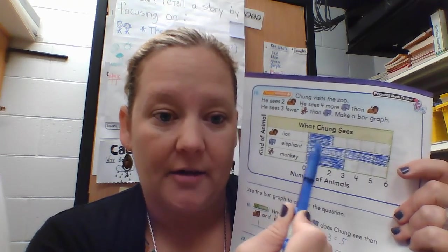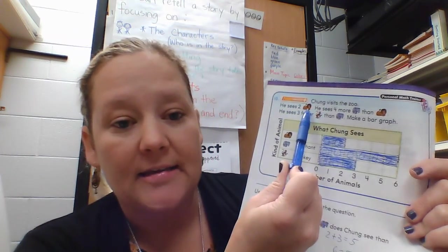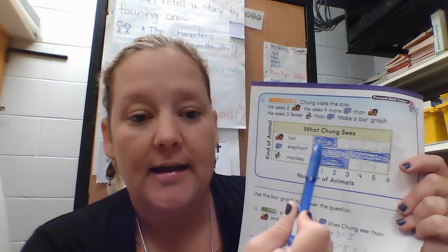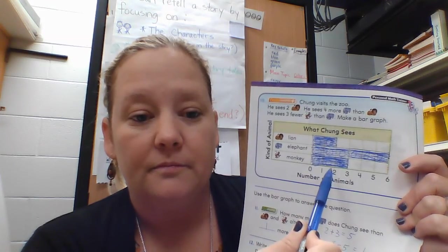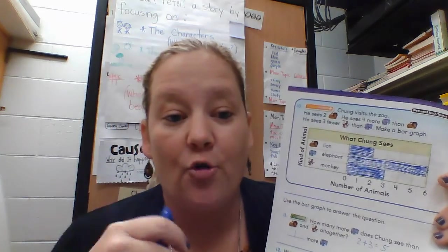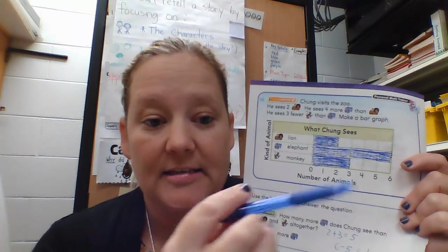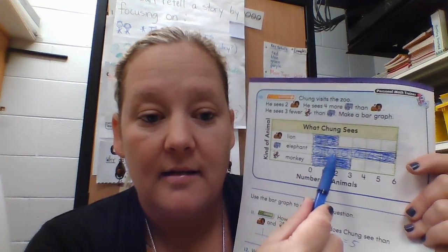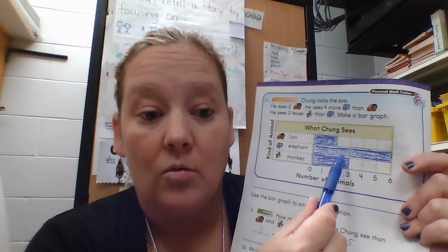I went back and colored them in to make them like bars. The first one says he sees two lions, so you have to make a bar for the lions and make it stop at two. Then it says he sees four more elephants than lions, so I need to start at two elephants to match the lions and then add four more: one, two, three, four — and it stops at six.